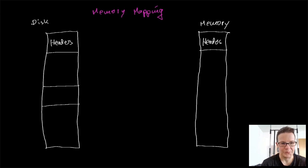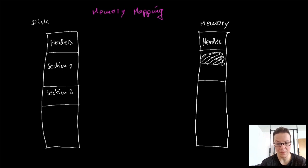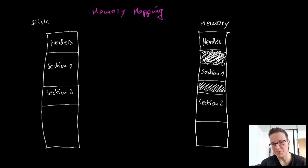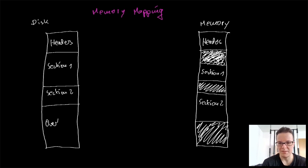Alright, so our example file has two sections which are translated to memory, and then there's an overlay on disk. The overlay is not mapped into memory. So the memory mapping will also contain the headers, it will contain the sections, it will not contain the overlay. The space that I fill out here with garbage is just not used, so it will usually just contain zeros.